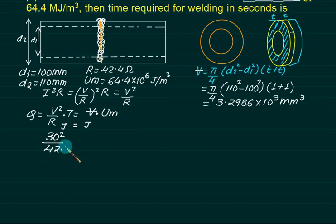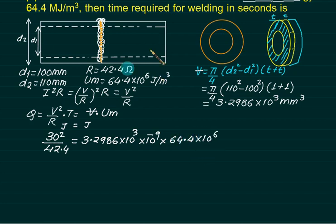How much resistance? 42.4. What is volume? 3.298 into 10 to the power 3 and further multiplied by minus 9. And unit melting energy is 64.4 into 10 to the power 6. What is required is only time. We can calculate. Let's say 10 seconds.